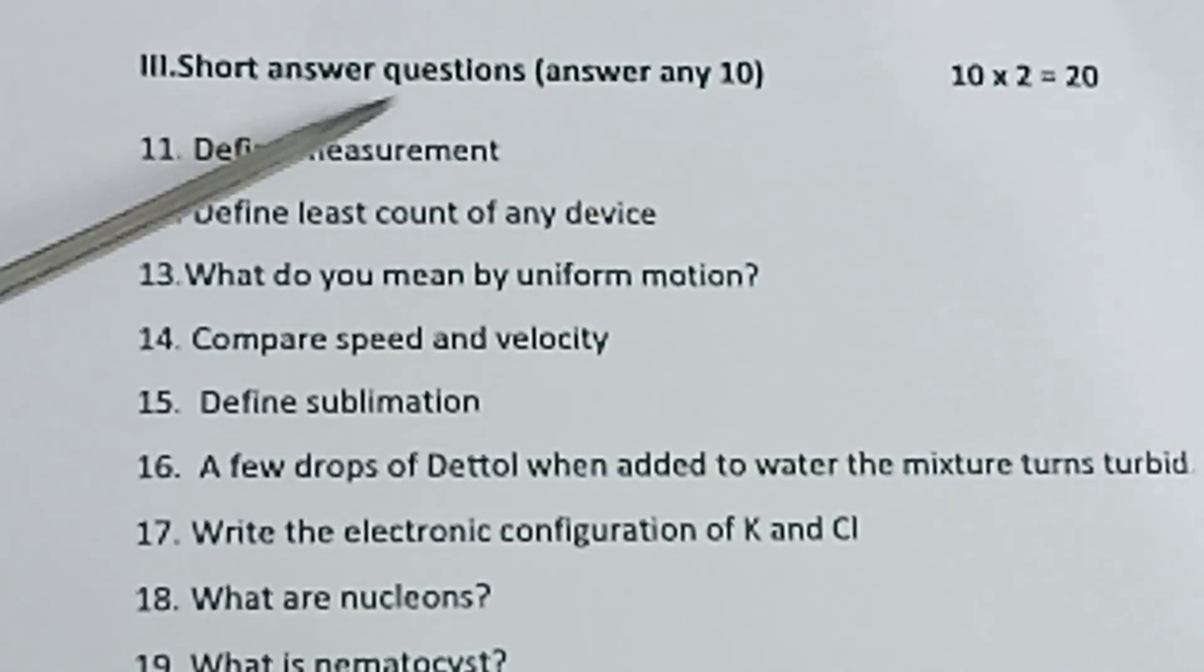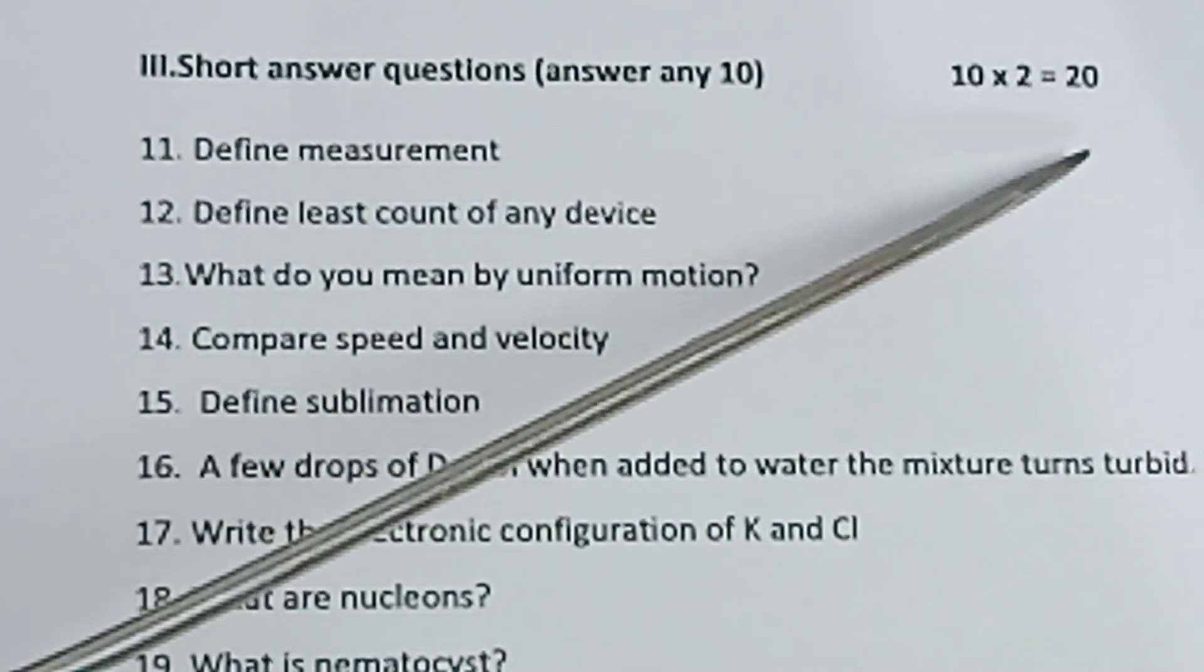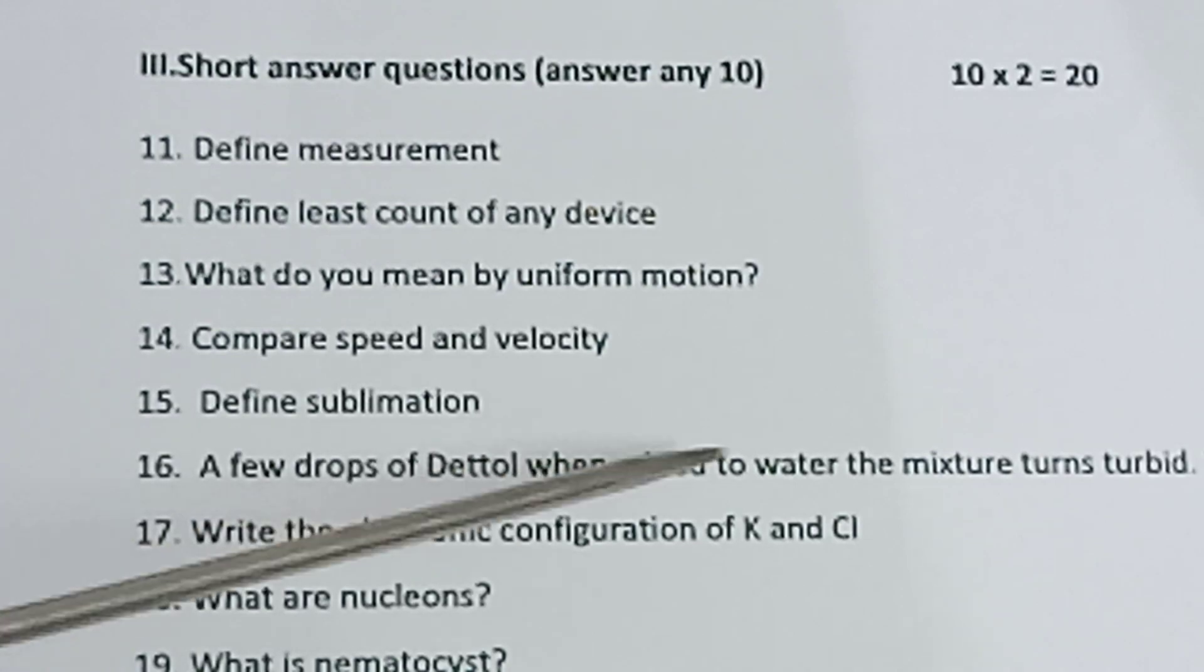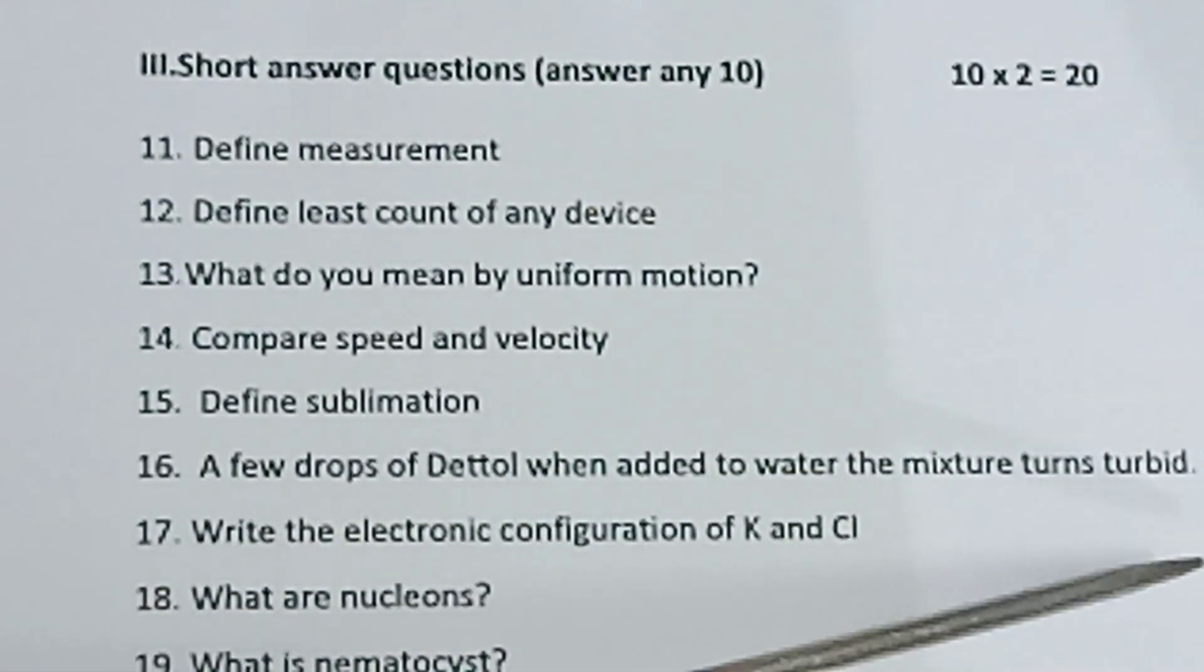Part 3: Short answer questions. Answer any 10. 10 x 2 = 20. Question 11: Define measurement. Question 12: Define least count of any device. Question 13: What do you mean by uniform motion? Question 14: Compare speed and velocity. Question 15: Define sublimation. Question 16: A few drops of Dettol when added to water, the mixture turns turbid. Why?